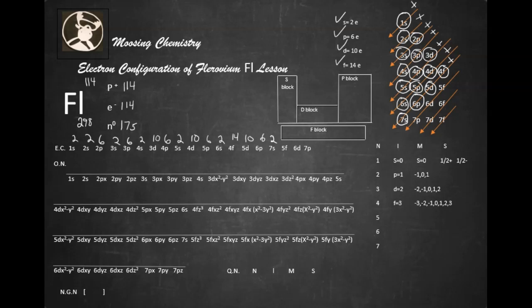5f14. Let's make that 14 a little bit better. Then 6d10, and finally 7p2. When you add all these electrons up, you get 114. Alright, the next electron configuration we do is something called orbital notation.